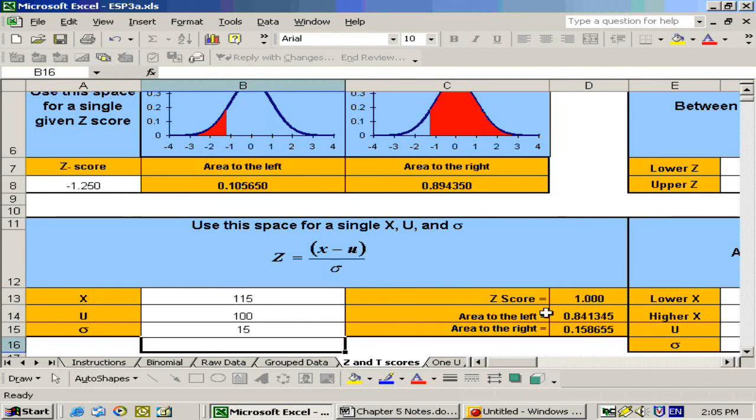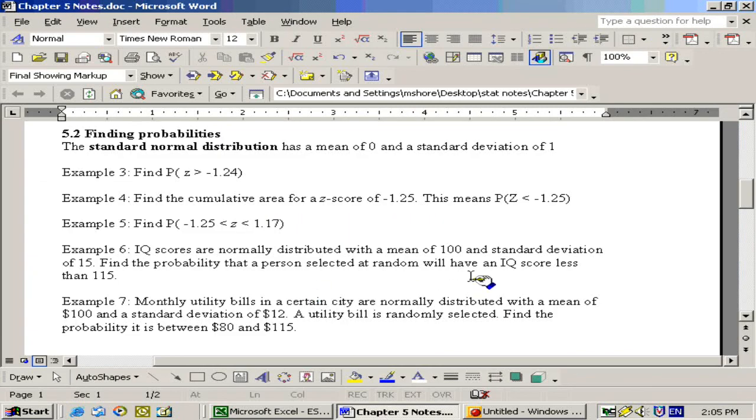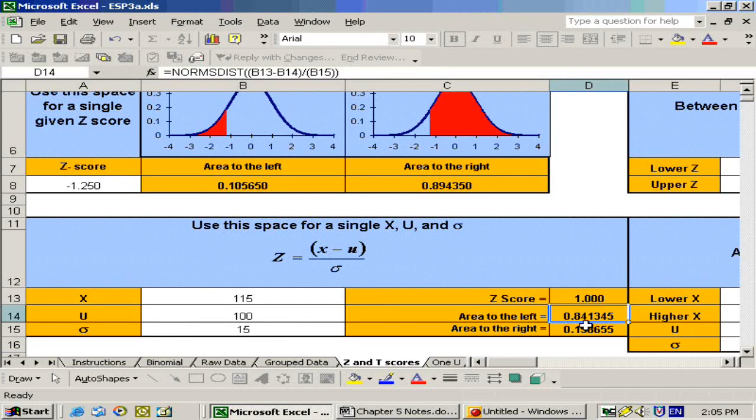Then what we know is that we have a z-score of 1. The question was, what is the probability that a person selected at random will have an IQ score less than 115? So we're looking to the left because it said less. To the left, the answer is 0.841345, and that's the answer to that problem.